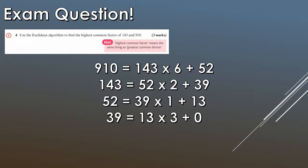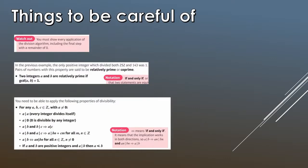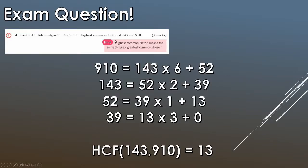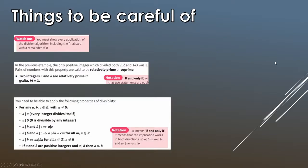So just a couple of things you have to be careful of. And these are actually from the textbook, so these are Edexcel's official warnings I guess if you want to call it that. You have to show every application of the division algorithm. So you have to show each step including this very last line. Don't think you can skip this because there's going to be a remainder of zero. Please do show it guys, you'll lose a mark for that. So be very careful for that.